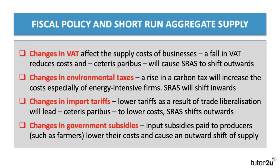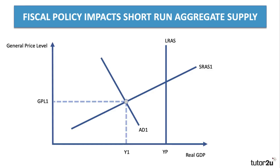Trade policy is linked to fiscal policy — import tariffs are a form of tax on the costs of imported goods and services. If tariffs come down as a result of trade liberalisation, perhaps through trade agreements between the UK and other countries, that will lead to lower costs for businesses that have to import, and aggregate supply in the short-run will shift outwards. On the government spending side, changes in spending on subsidies will also impact on supply. If the government increases an input subsidy paid to producers — for example, farmers might have some of their costs paid — an increase in subsidies lowers their costs and causes an outward shift of supply.